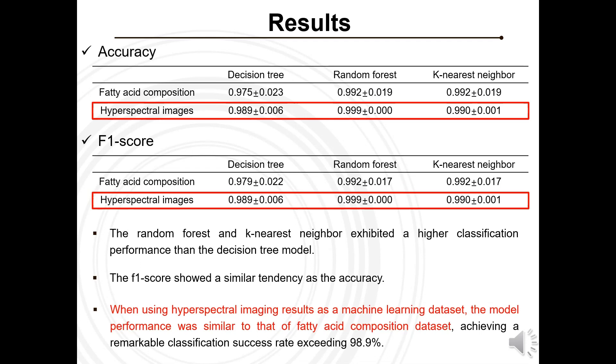Consequently, the study reveals that hyperspectral images exhibit comparable performance to fatty acid composition analysis data. Particularly, when employing random forest models, an impressive classification accuracy of 99.9% can be achieved for identifying various types of oils.